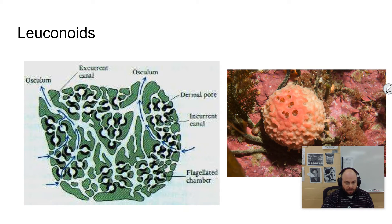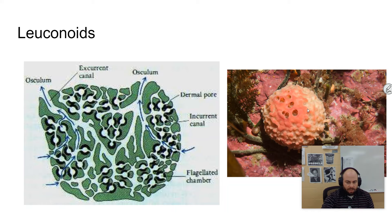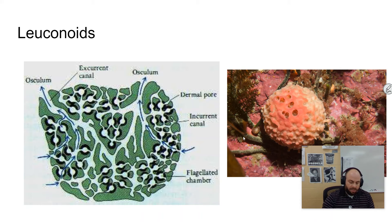Each tiny chamber in the leuconid is lined with choanocytes and is called a flagellated chamber — meaning there are many flagella inside. The osculum is not as pronounced; there are several oscula, multiple different holes. A single leuconid sponge may have around 2 million feeding chambers, making it much more efficient at taking in nutrients. As a result, some of these sponges can grow very large.